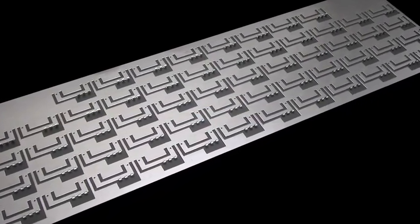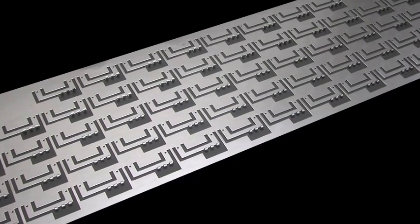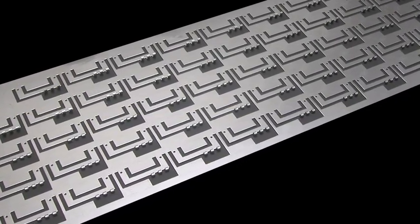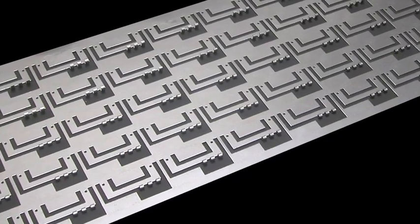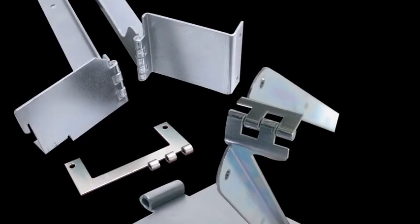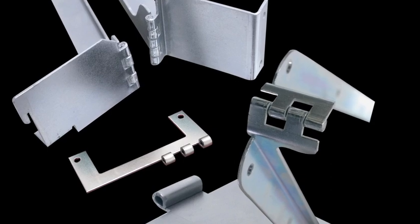Let your punch press do the work for you. Create hinges directly on the parts that use them while eliminating secondary operations such as spot welding or riveting in place.